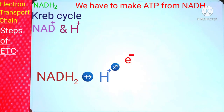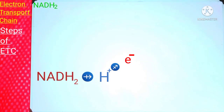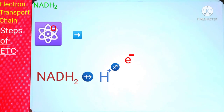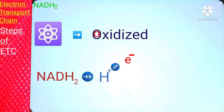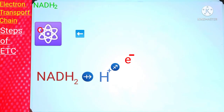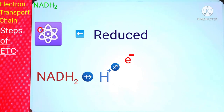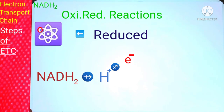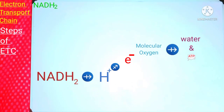This electron is transported through a series of oxidation-reduction reactions. When an electron is removed from a substance it is oxidized, but when an electron is added to a substance it is reduced. The movement of electrons sets up these oxidation-reduction reactions. Ultimately, these electrons react with molecular oxygen to give us water and ATP — that is the complete idea of ETC.